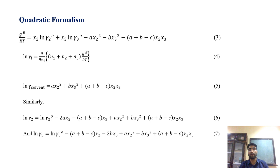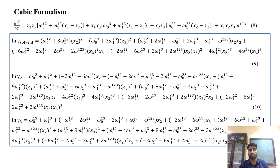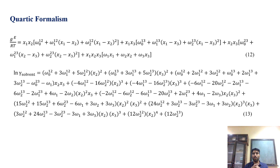For example, equations 5, 6, and 7 are obtained from equation 3 by using equation 4. Similarly, in the cubic formalism, we have a third order polynomial that represents the excess free energy of the system. If we have to obtain the values of the activity coefficient of the solvent, solute 2, and solute 3, we have to go through the same procedure.